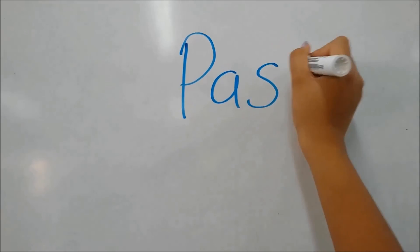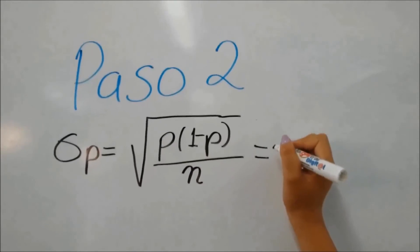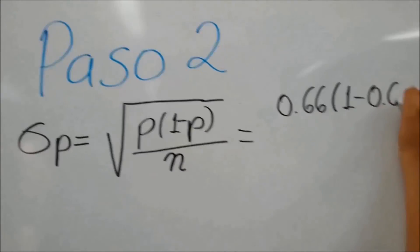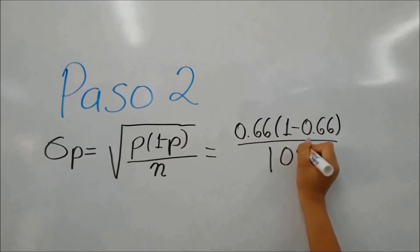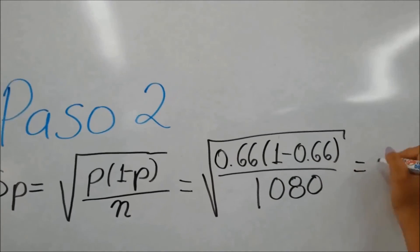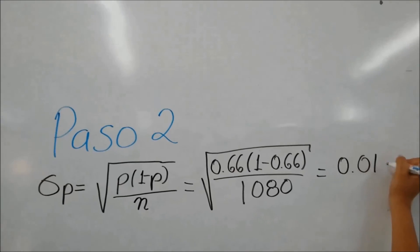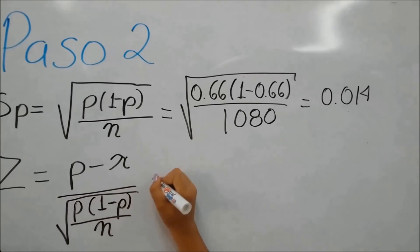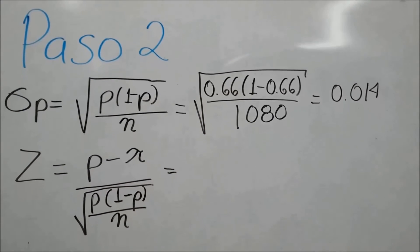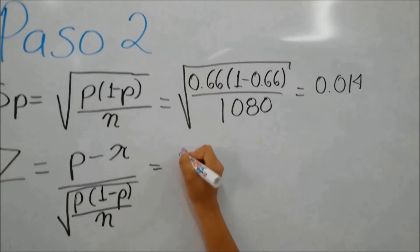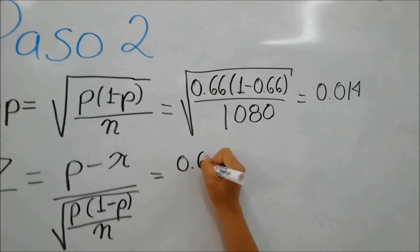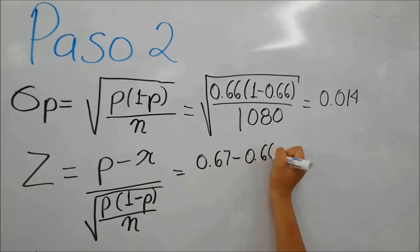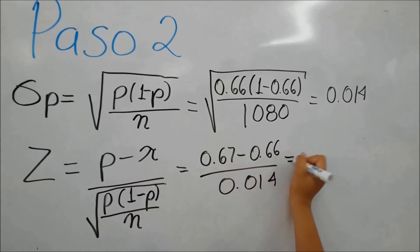Paso 2: calculamos el error estándar sustituyendo en la fórmula los valores de p minúscula, que es igual a 0.66, y n, que es igual a 1,080. Realizamos los cálculos correspondientes y esto nos da como resultado 0.014. Calculamos nuestro estadístico de prueba, sustituyendo en la fórmula los valores de P mayúscula, que es igual a 0.67 (este valor lo obtenemos dividiendo 722 entre 1,080), π que es igual a 0.66, entre el error estándar. Y esto da como resultado Z = 0.61.